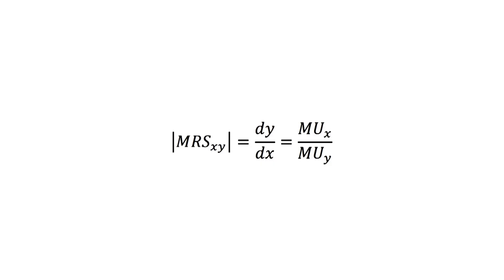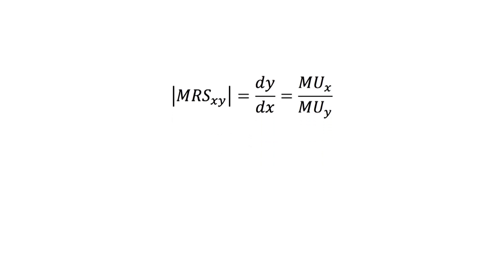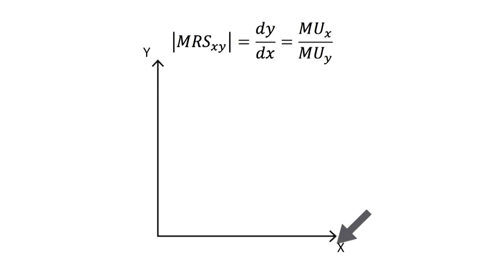We will use some utility function examples to better understand the marginal rate of substitution formula. The x-axis or horizontal axis shows the amount of good x consumed, while the y-axis or vertical axis shows the amount of y consumed. Our first example of utility function will be as follows: utility equals x squared plus y squared.